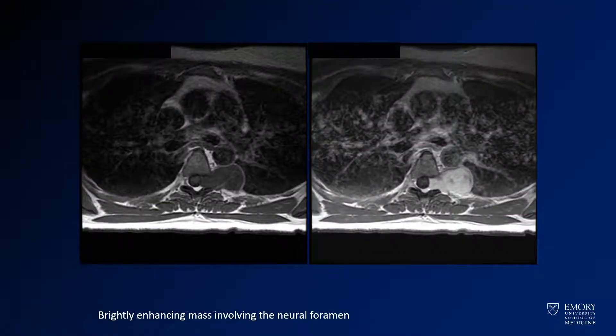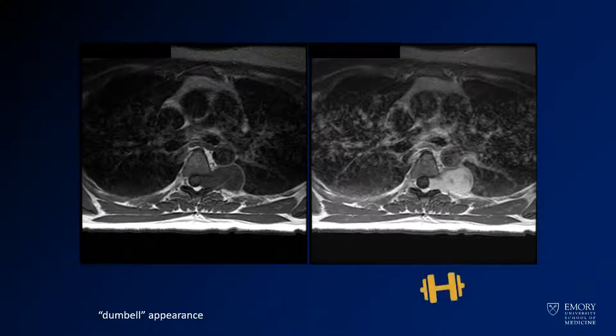Here you see the MR images of pre- and post-contrast. You have this brightly enhancing lesion. This kind of has a dumbbell shape with that waist at the level of the neural foramen.